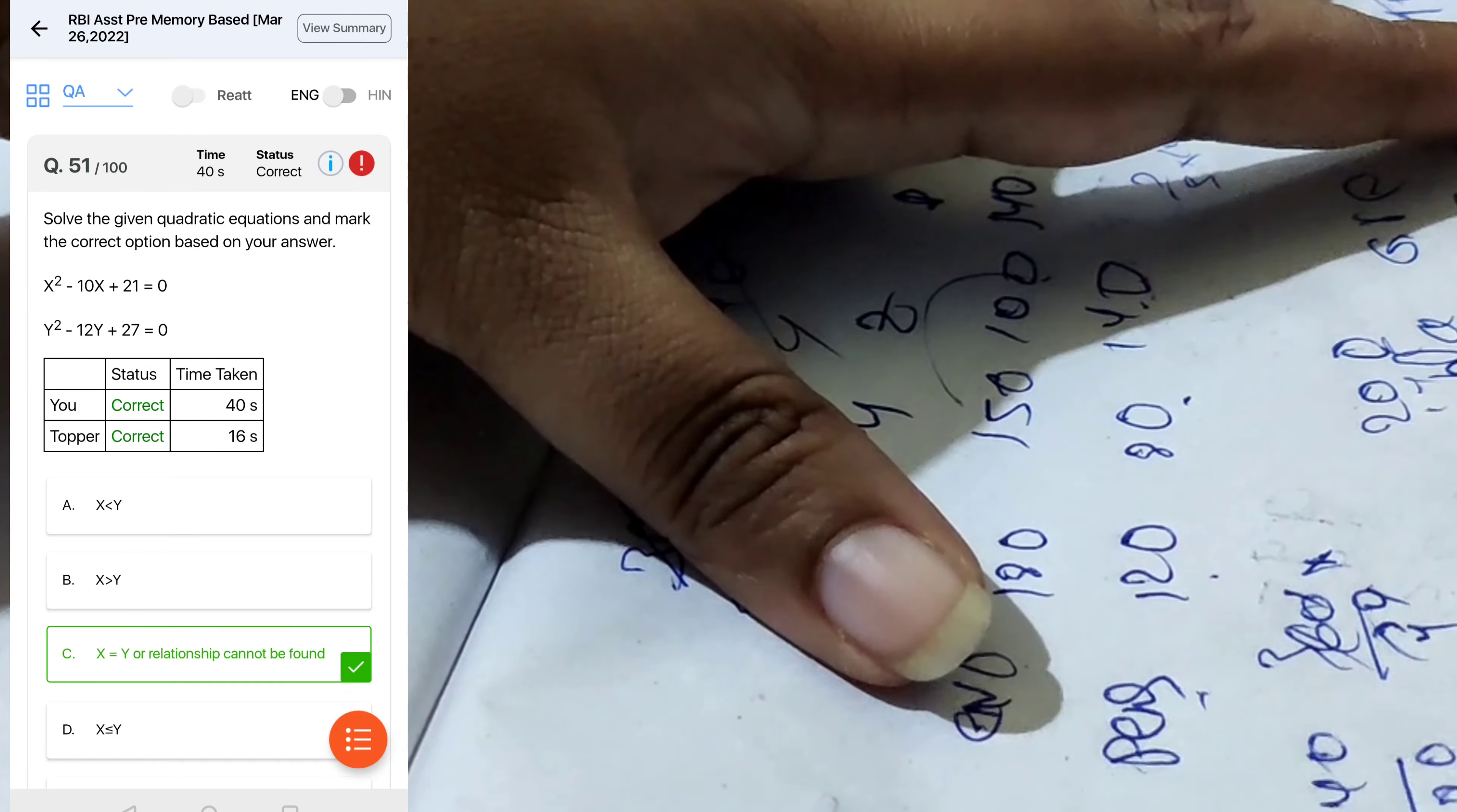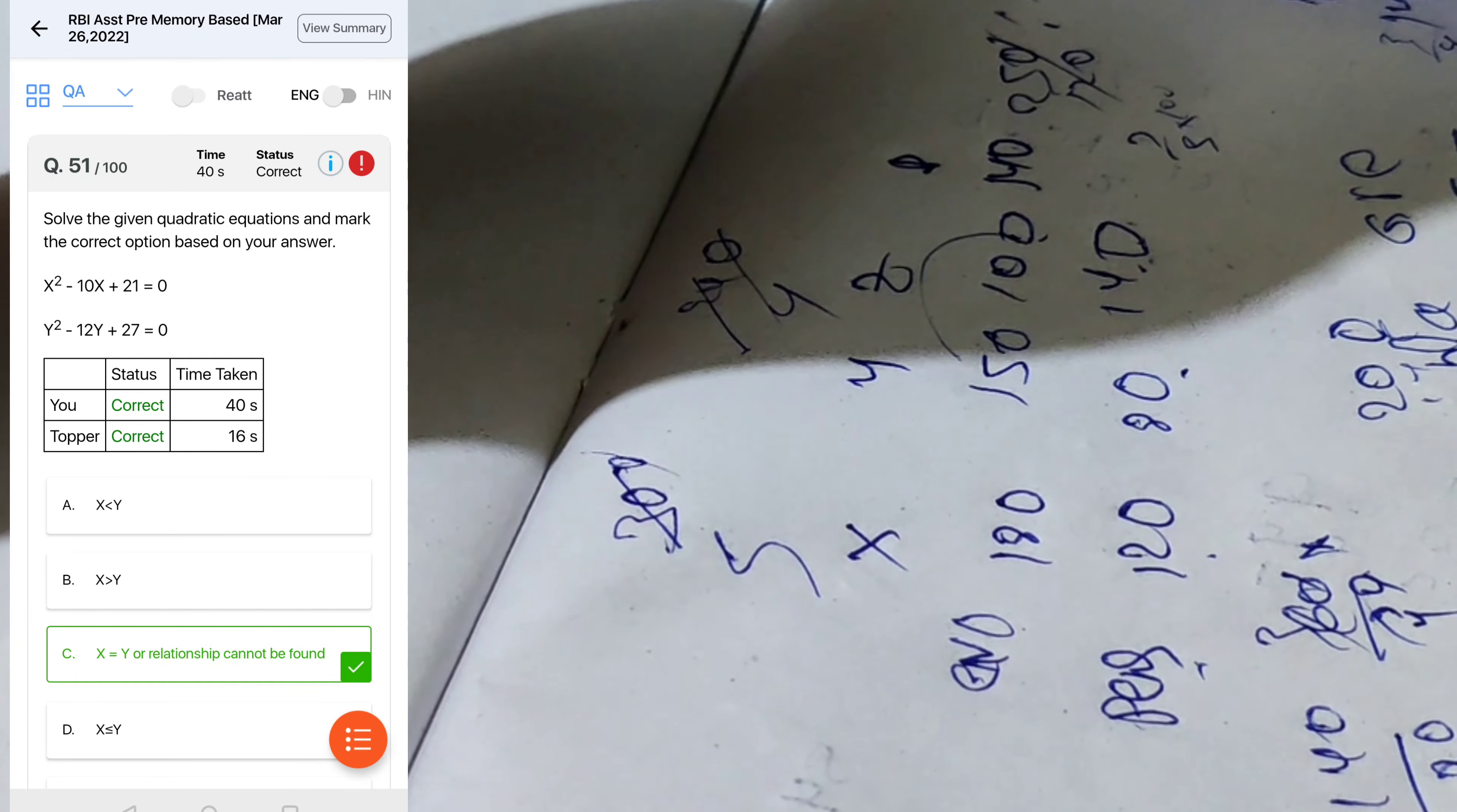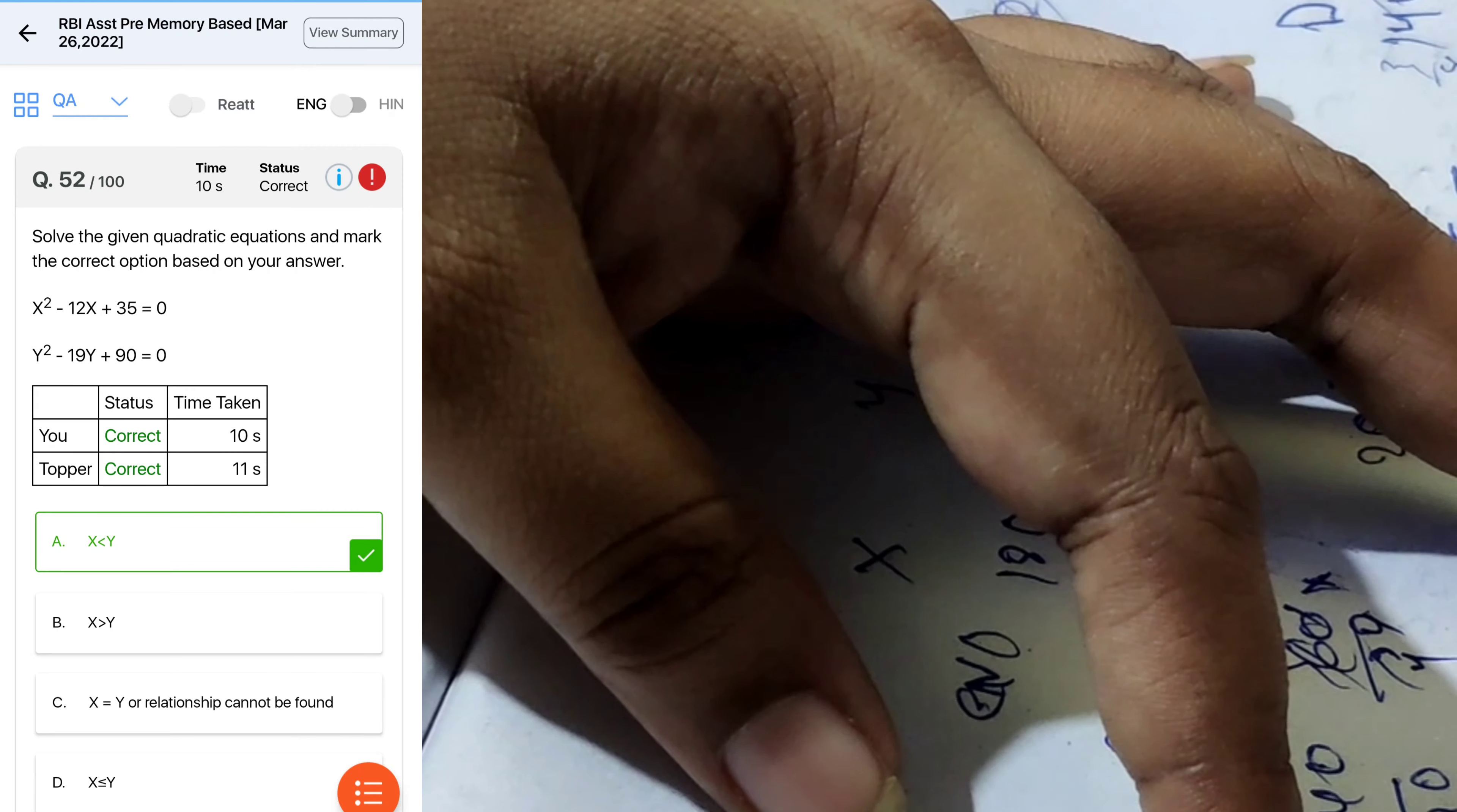Next, quadratic equations. 73, x is 73 and y is 90. So here x less than and greater than. So this is less than and equal.